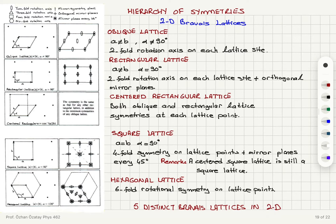So oblique lattice, rectangular lattice, centered rectangular lattice, square lattice, and hexagonal lattice — these are our two-dimensional Bravais lattices, listed in order of increasing symmetry. The symmetry properties become richer as you go from oblique lattice to hexagonal lattice.